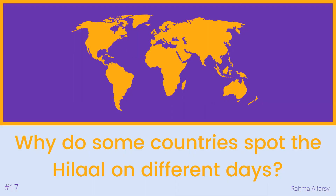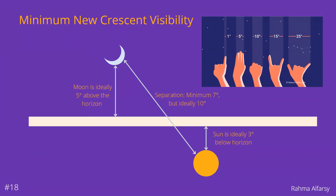The Islamic Hijri calendar is, according to the Sunnah, supposed to be local and observational. And we know too well that some countries spot the Hilal on different days. So why exactly is this? First, we need to know about the minimum conditions needed to see a new crescent, described by degrees — a measure of distance on the sky — which can be approximated using your fingers or hand span.